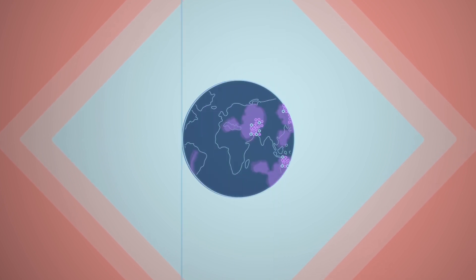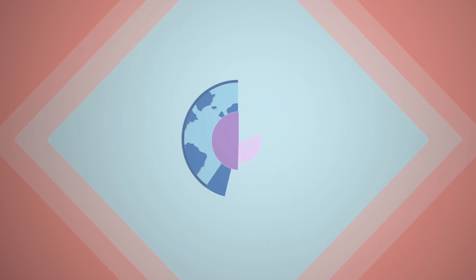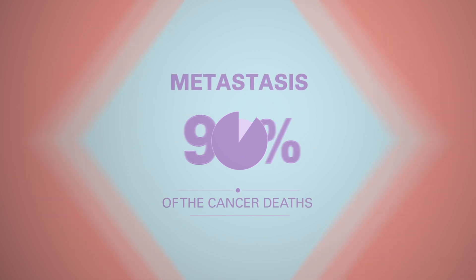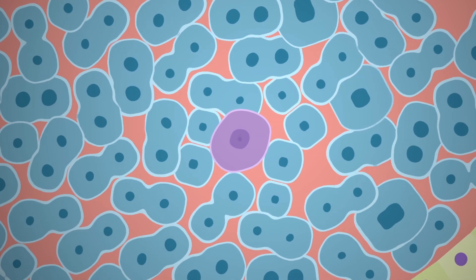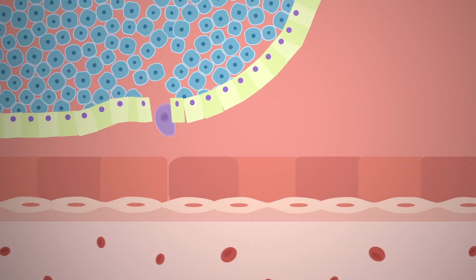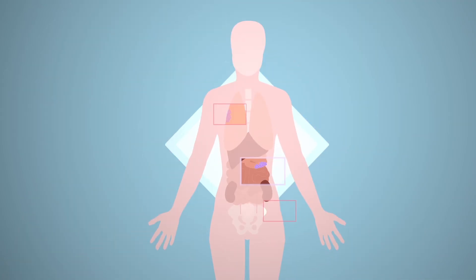Cancer is one of the biggest killers of the 21st century. Over 90% of the deaths caused by this disease are due to metastasis, which happens when some cancerous cells detach from a tumor and travel on the bloodstream or the lymphatic system to form new tumors in distant sites of the body.